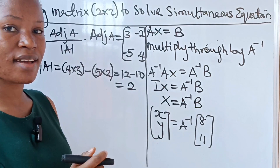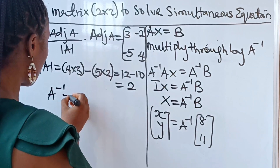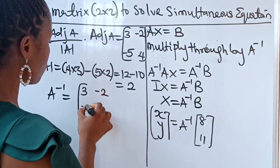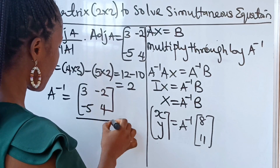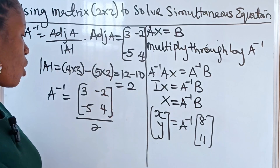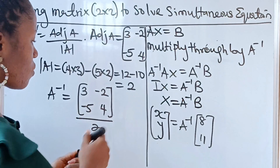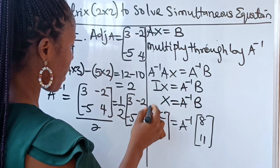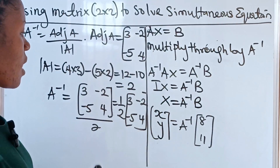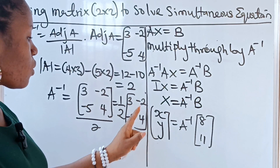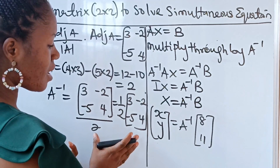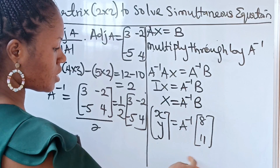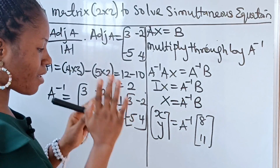Now A⁻¹ equals the adjoint of A divided by the determinant, which is [3,-2; -5,4] divided by 2. We can write this as (1/2) × [3,-2; -5,4], or equivalently one-half multiplied by the matrix [3,-2; -5,4].